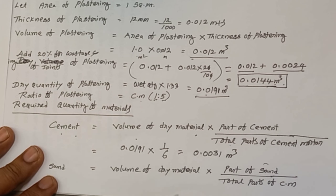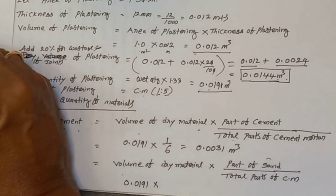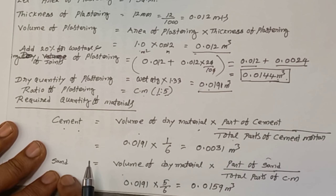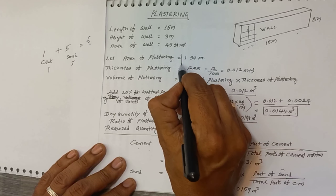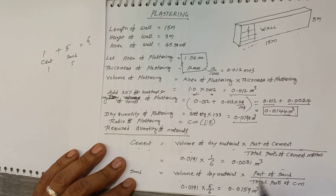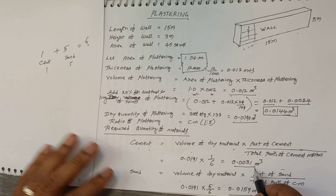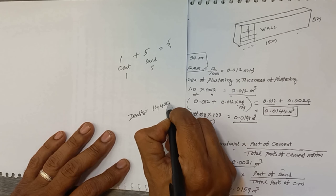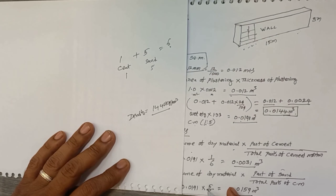Now coming to sand — the same formula is applied. Volume of dry material multiplied by sand part (5) divided by total parts (6). So sand = 0.0191 × (5/6) = 0.0159 m³. Cement is sometimes available in bags, so we have to convert this cement volume into kilograms. Cement density is equal to 1440 kg per cubic meter.